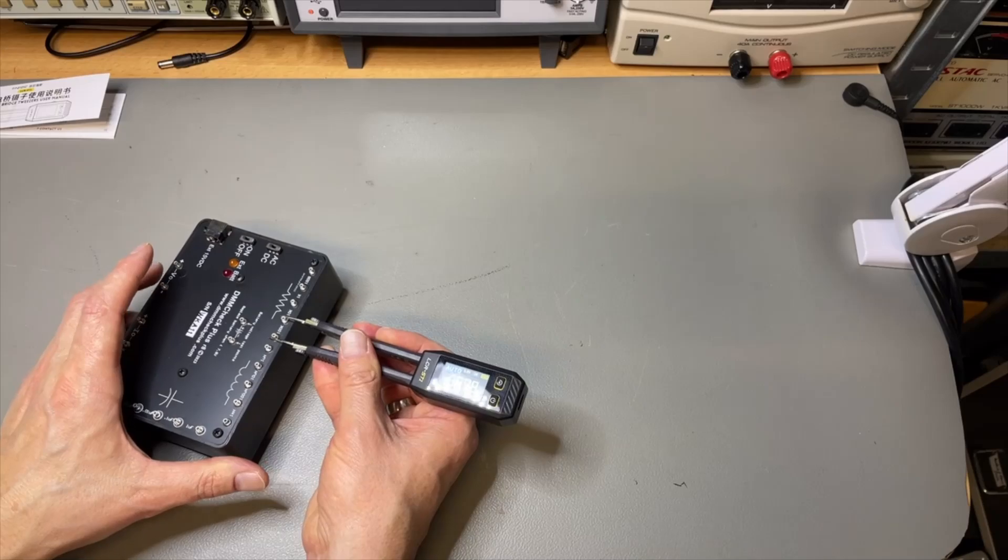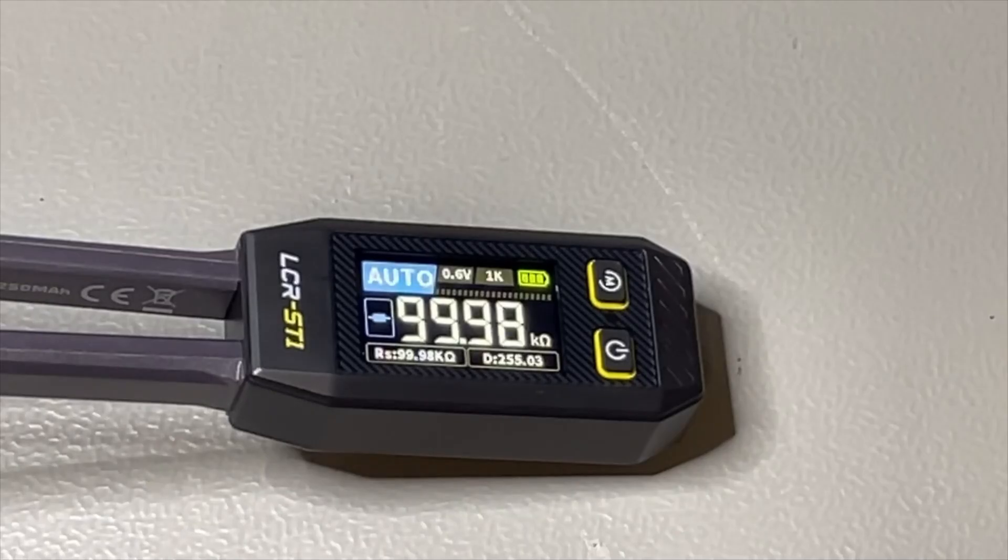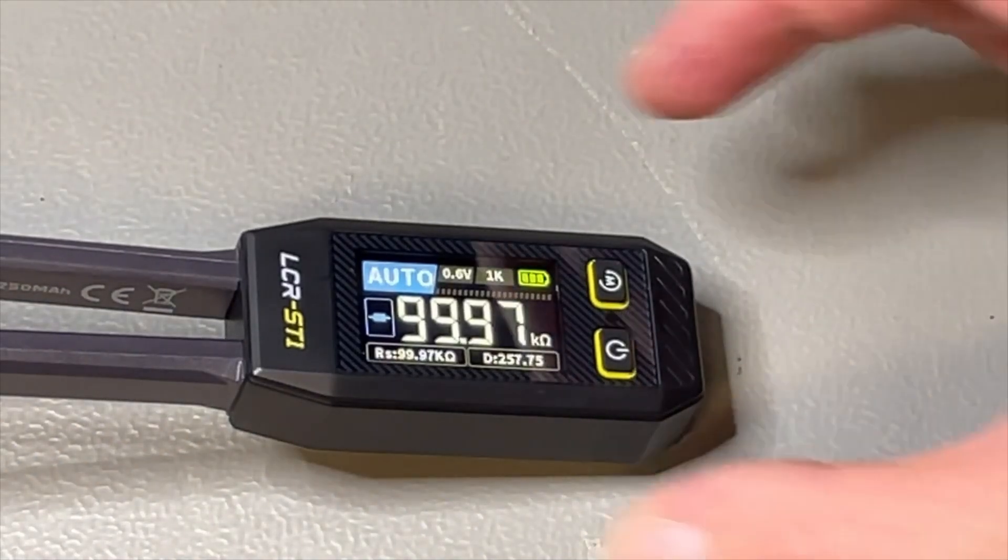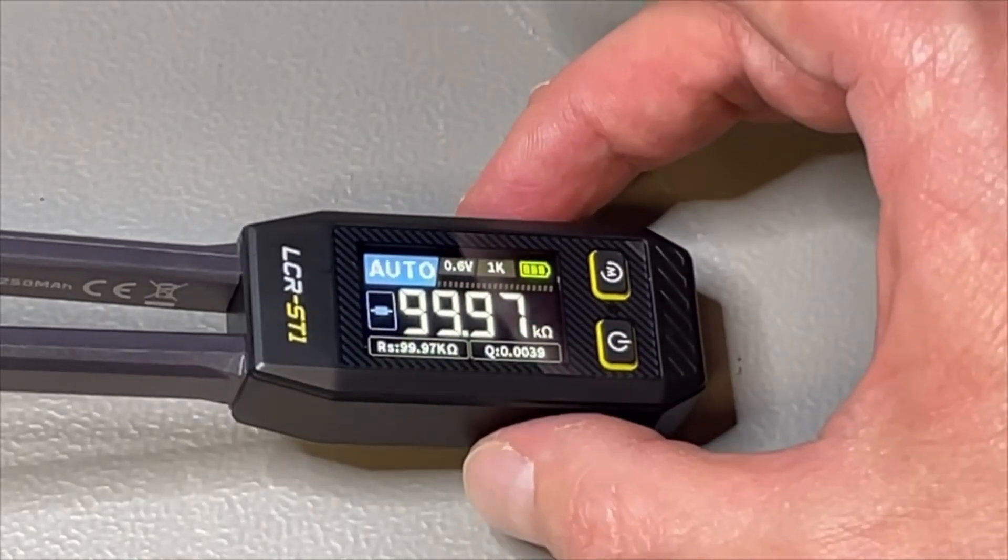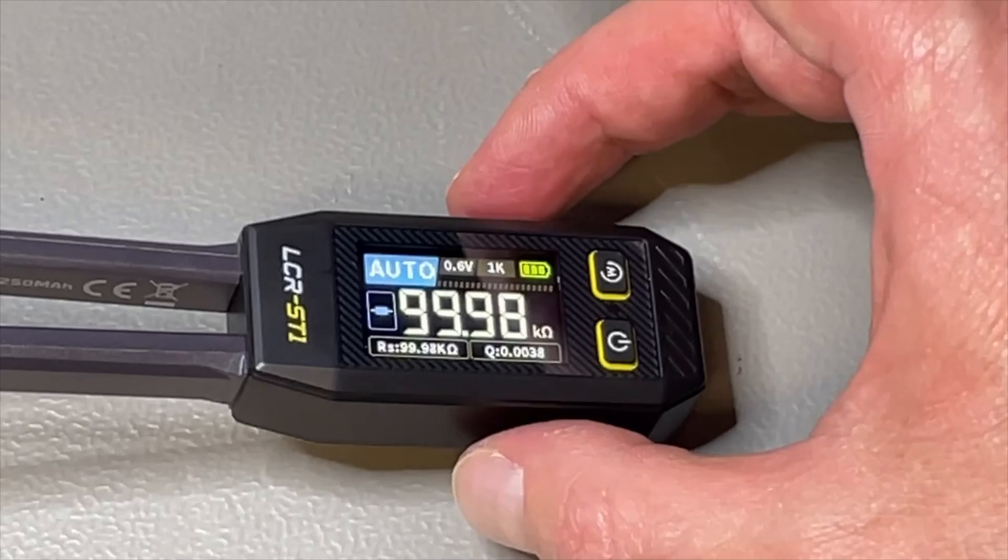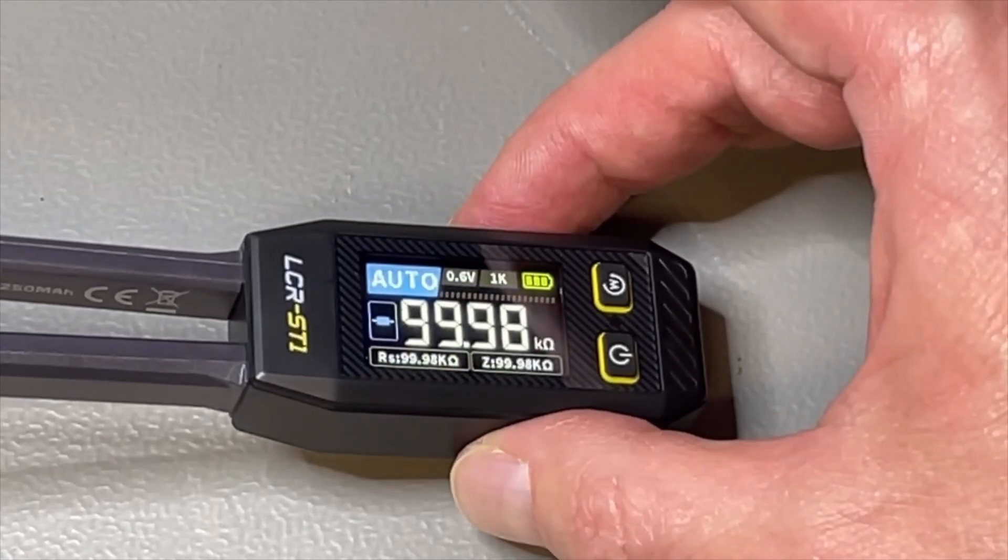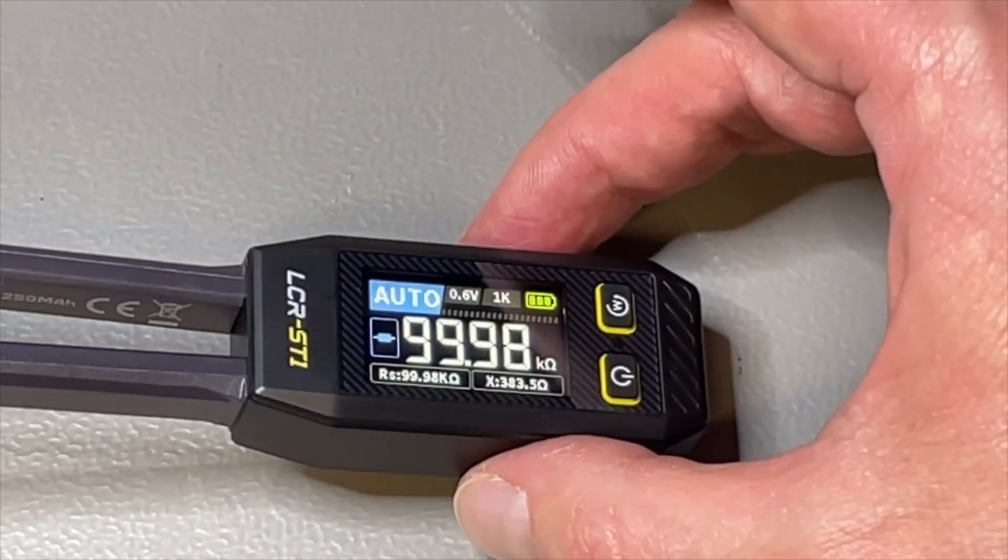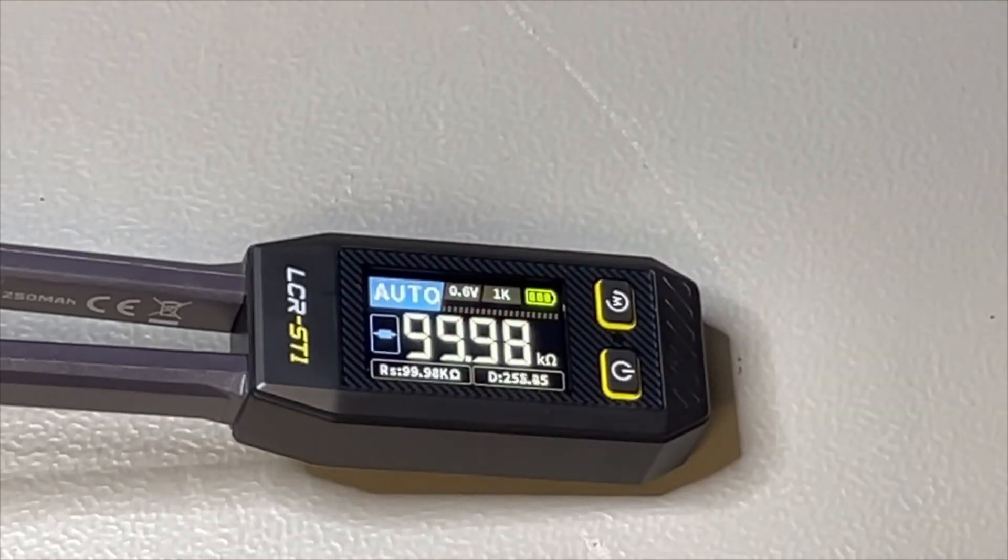And when we zoom in, we can also see the secondary values. We see the RS and the D. And I think you can change it by long pushing also the top button. It will change. Now we see also the Q. Now we see the Z, the impedance. The X and the D. This was the default.